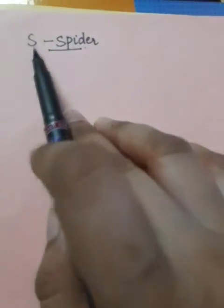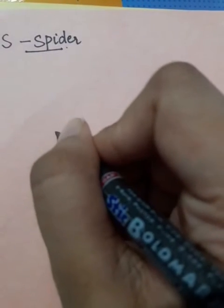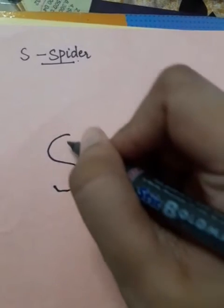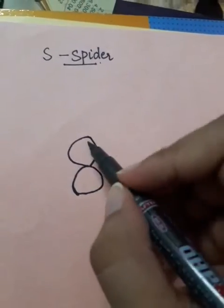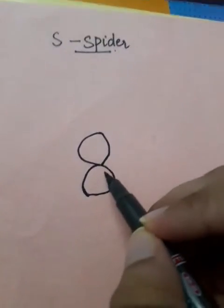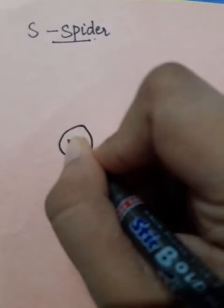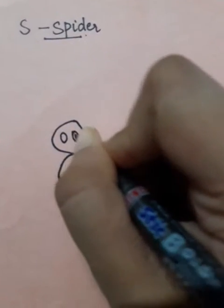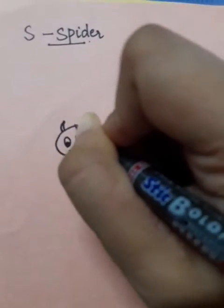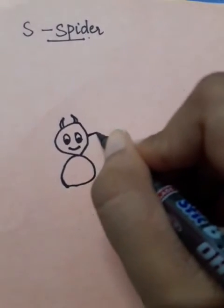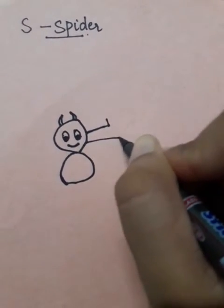Hello students, today we are going to learn how to make a spider by using alphabet S. First we will write alphabet S. Then we will make a shape of an 8. Now we will make its eyes, two eyes. Mouth, then its legs.